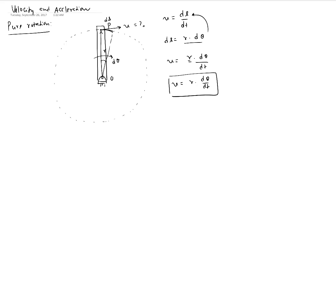What is dθ/dt? It's basically the rate at which this angle changes. If the body is rotating faster, this angle changes faster. This quantity dθ/dt is defined as angular velocity of the object. The angular velocity is actually a property of the rigid body, because every line in this object will rotate by the same angle in the same amount of time.